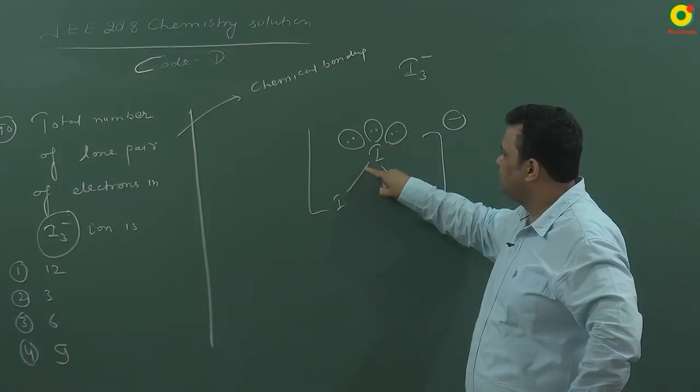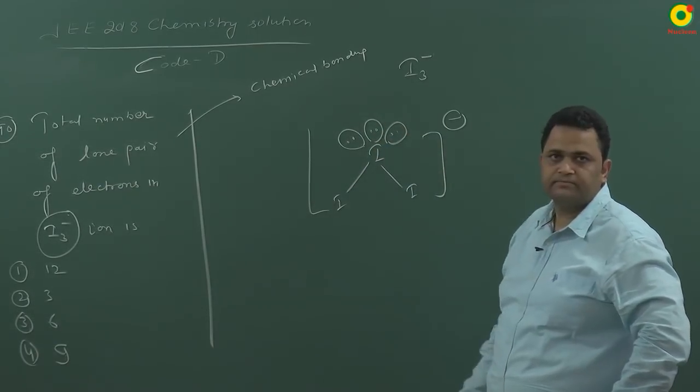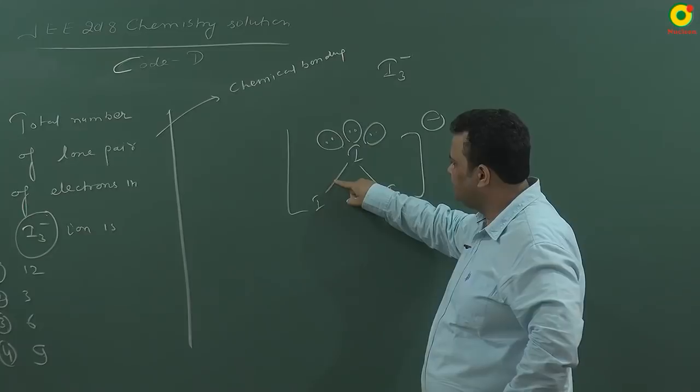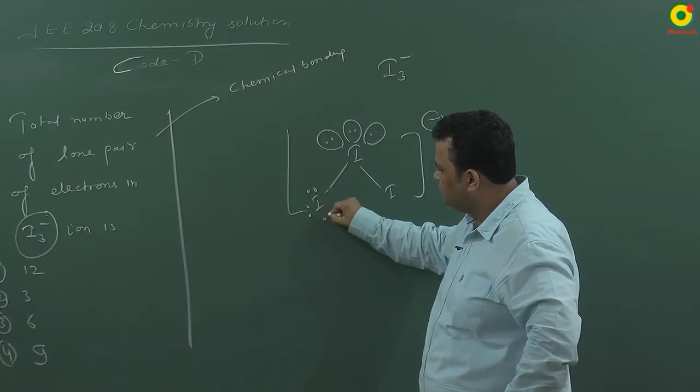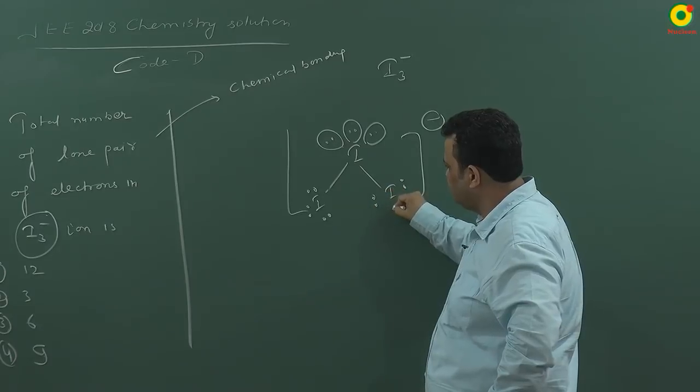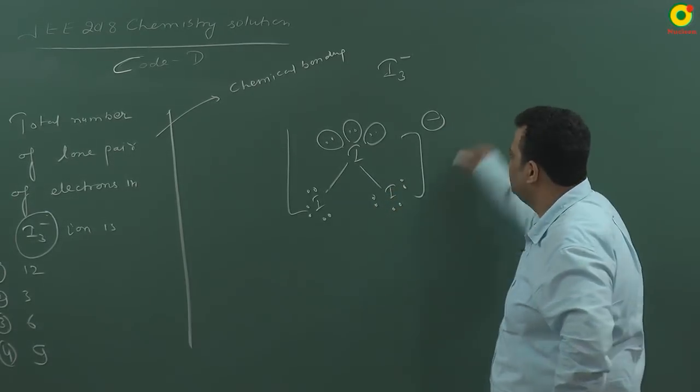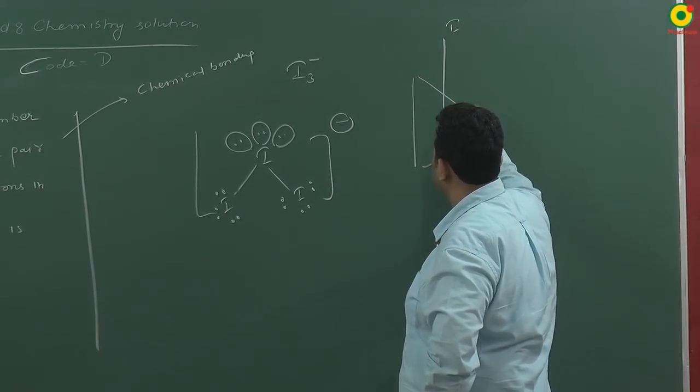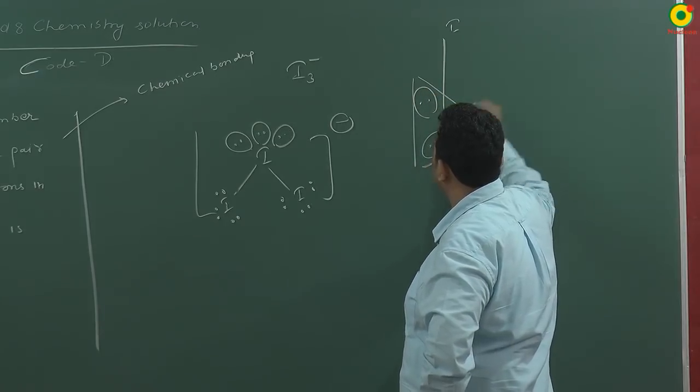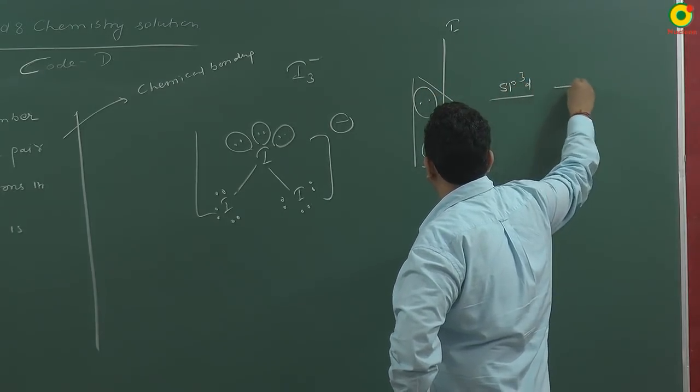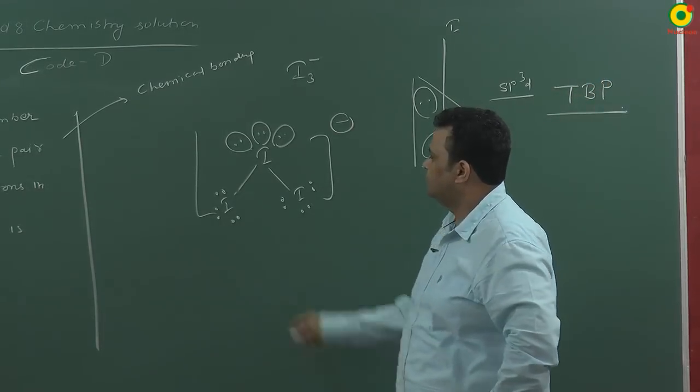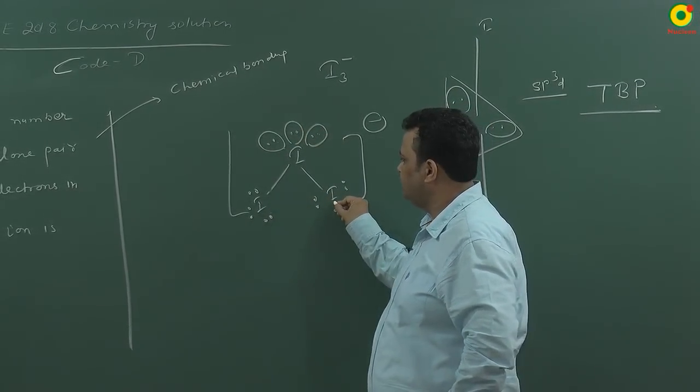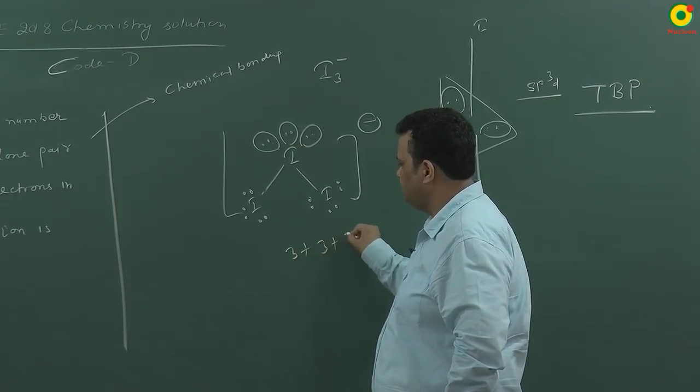Two electrons are shared with another iodine atoms and there are 3 lone pairs. If we see other iodines, it is having 7 valency shell electrons, 1 is shared, so remaining 3 lone pairs will be there. Each iodine at terminal position is having 3 lone pairs. Structure is trigonal bipyramid and it is linear in structure shape. Hybridization is sp3d and the shape is trigonal bipyramidal. We can count the lone pair from this structure. This is having 3 lone pair, terminals having 3 lone pair each. So total lone pair will be 9.